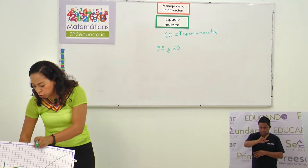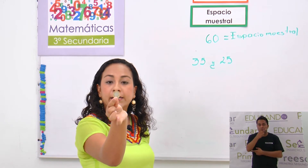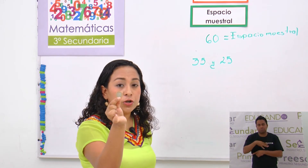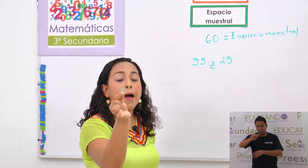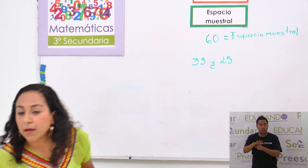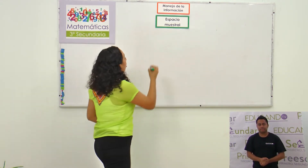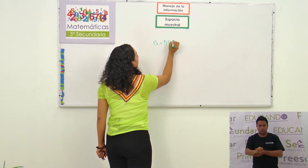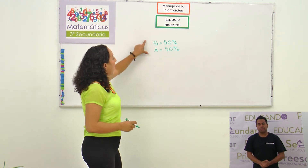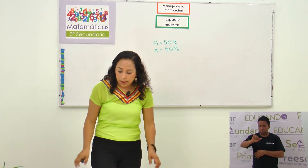Cuando yo aviento una moneda, hay solo dos opciones: sol y águila. El conjunto de las dos opciones es el espacio muestral. ¿Cuál es la probabilidad de que salga sol al primer lanzamiento? Exacto, 50%. Sol vale 50% y águila es 50%. Al conjunto de estos dos que estoy estudiando se va a llamar espacio muestral.